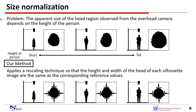The apparent size of the head region observed from the overhead camera depends on the height of the person — the apparent size of a tall person is large, and vice versa. We believe that differences in the spatial cue caused by height may reduce the accuracy of baggage weight classification. To reduce the influence of these differences, we apply size normalization to the head regions in the silhouette images.